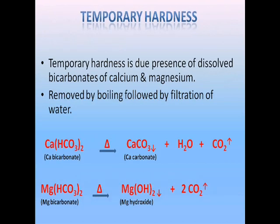Temporary hardness is due to the presence of carbonates and bicarbonates of calcium and magnesium, and is hence also called carbonate hardness. These salts increase the alkalinity of water, so it is also called alkaline hardness. It can be removed easily by boiling followed by filtration, and hence it is called temporary hardness.